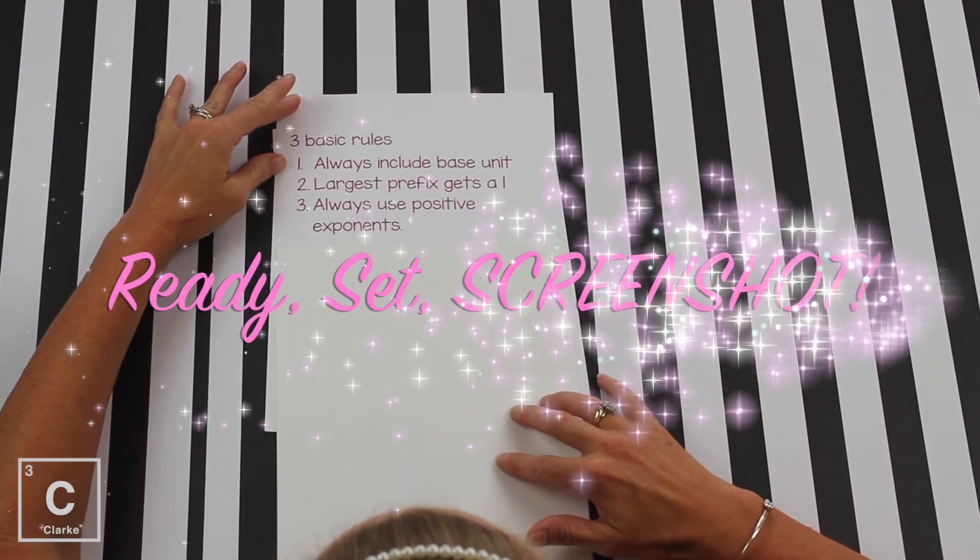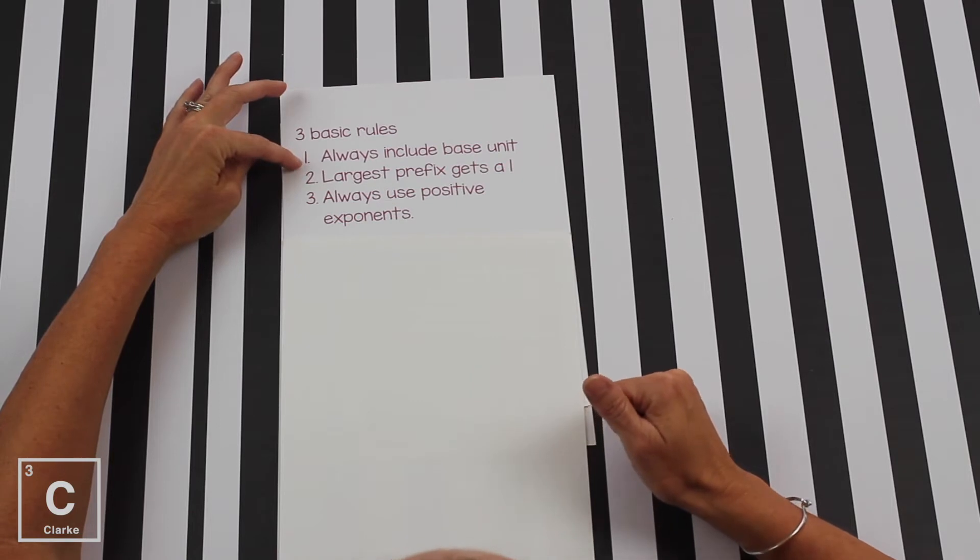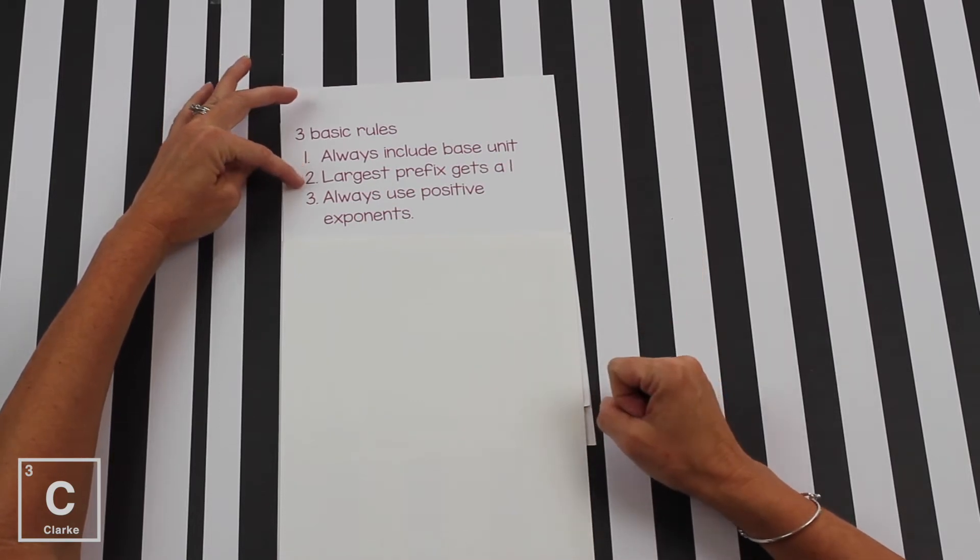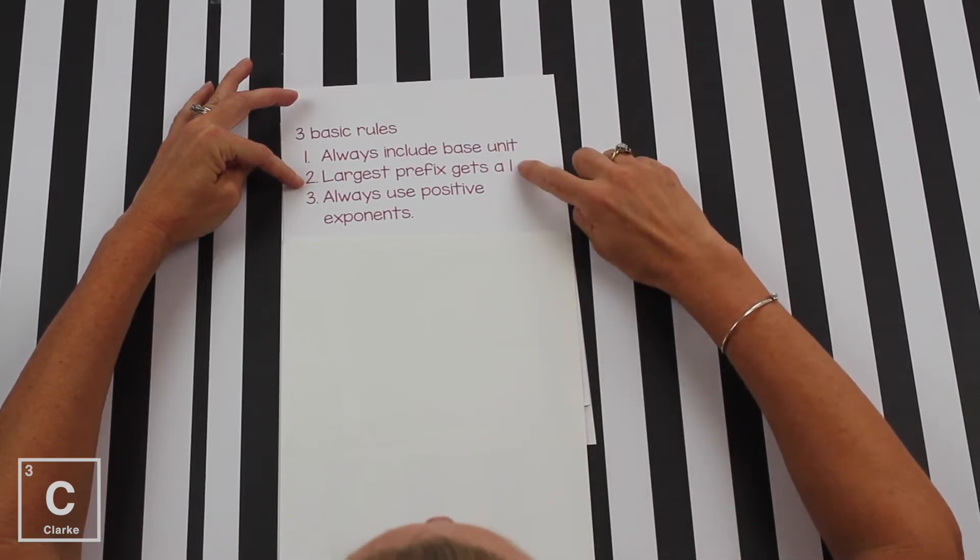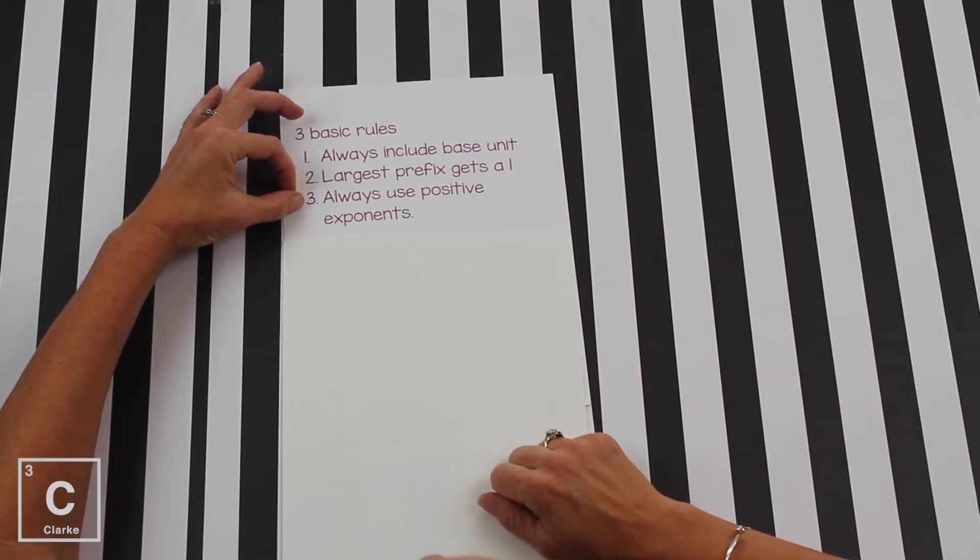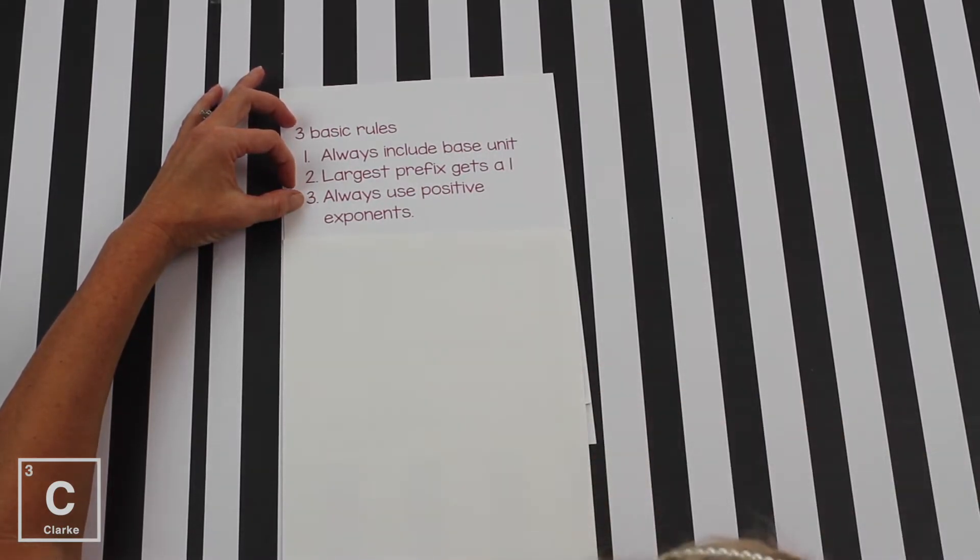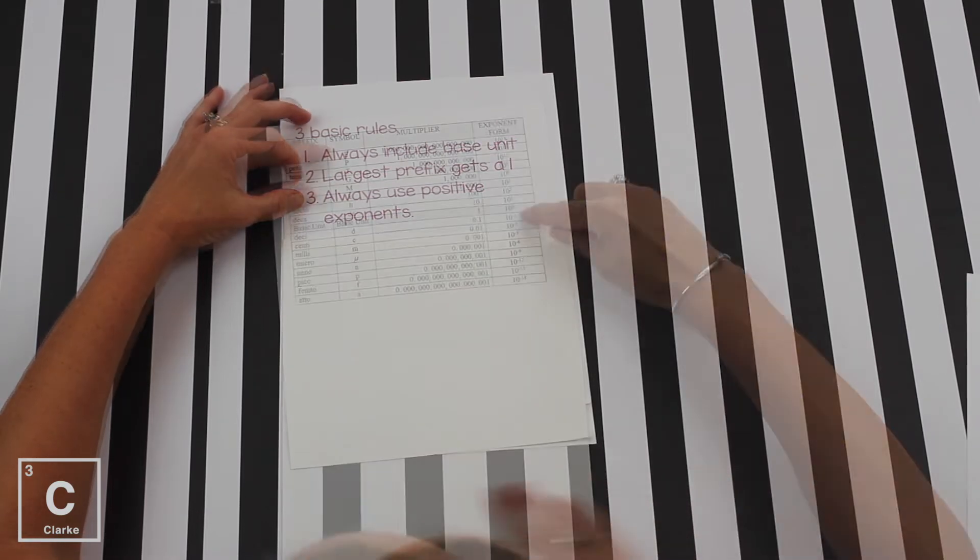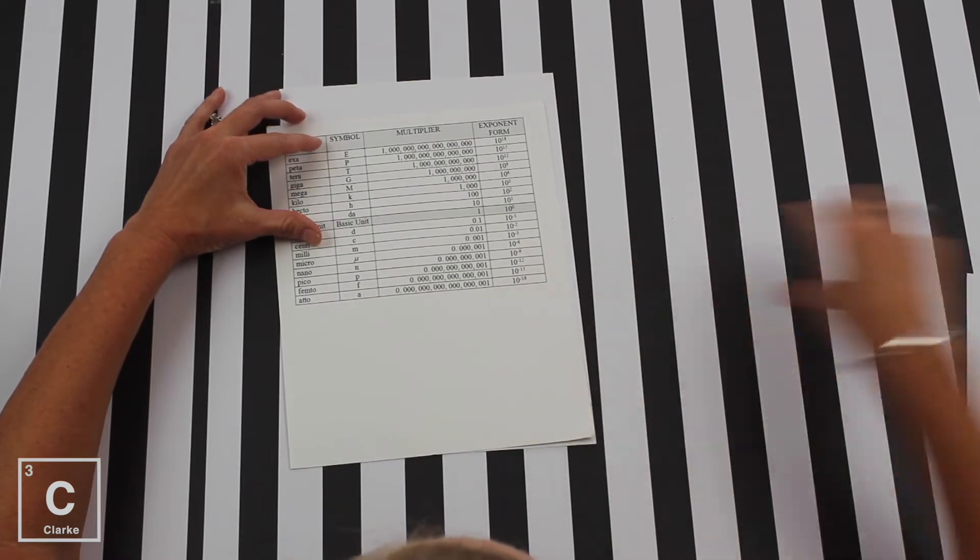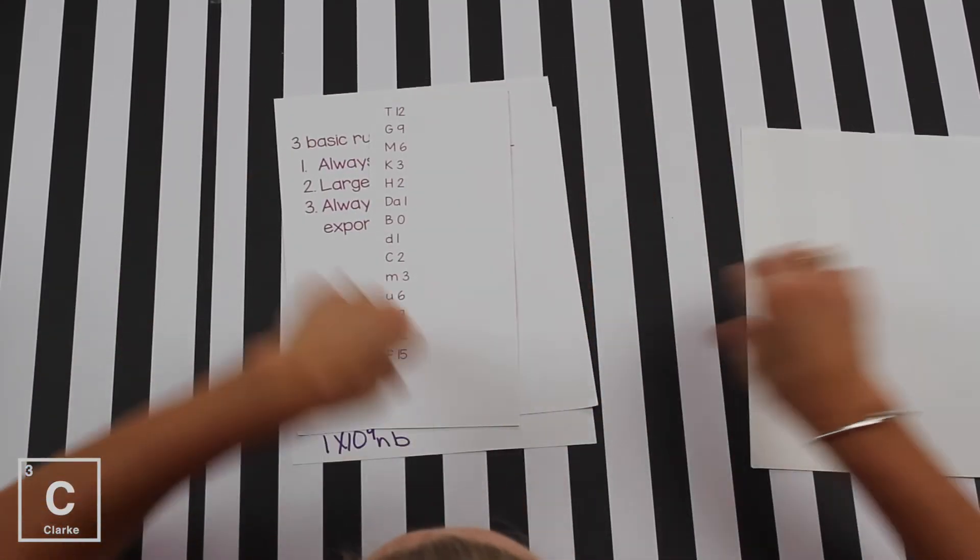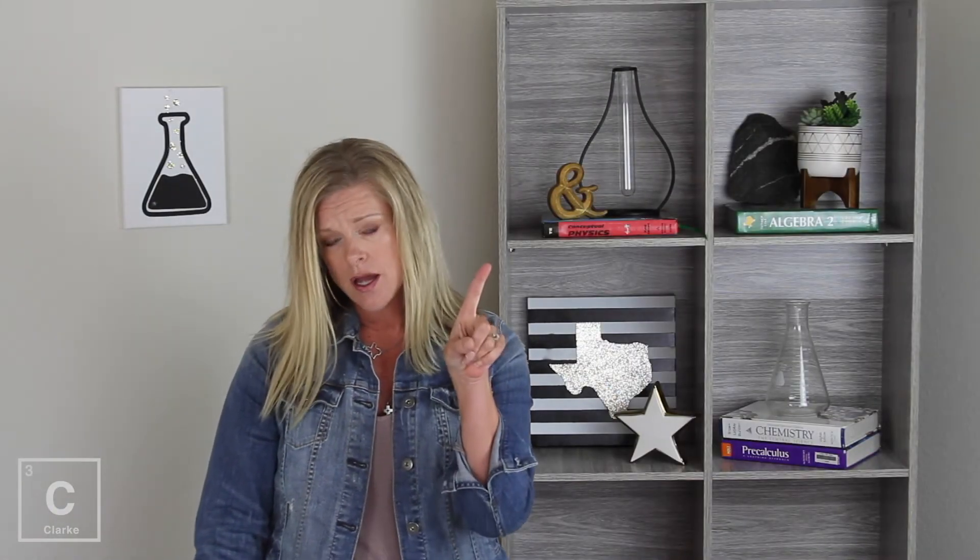Three basic rules. Always include the base unit. That'll make sense in a minute, I promise. Number two, the largest prefix gets a one. That's a one in my cute little font. Number three, always use those positive exponents. Don't use the negative exponents that we saw on that conversion chart. We're not using those. On my cute little cheat sheet, I always just use the positives. That's my tip. Use the positive. By giving the biggest unit a one, we can just always use positives. Positives, they're so much easier. I promise. This might be different than what your teacher is saying. I personally think this is way easier. Stick with me.